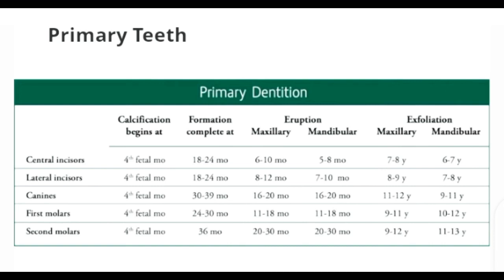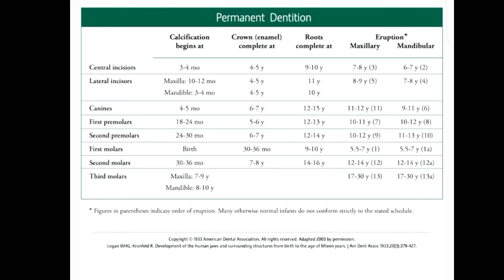Regarding the sequence of exfoliation, mandibular central incisors exfoliate at six to seven years of age. Maxillary central incisors and mandibular lateral incisors shed at seven to eight years, followed by maxillary lateral incisors at eight to nine years. Mandibular canines and maxillary first molars shed at nine to eleven years, while mandibular first molars, second molars, and maxillary canines shed at approximately ten to thirteen years.